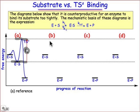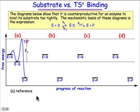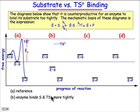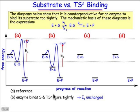Relative to the reference point, let's look at case B, where the enzyme binds both the substrate as well as the transition state structure more tightly. In this case, we've dropped the E·S below the reference point line, and by a similar degree we've dropped the transition state energy below the reference point line. Since they both fall by an equivalent energy, E sub A remains unchanged, and the rate of the reaction is going to be constant.